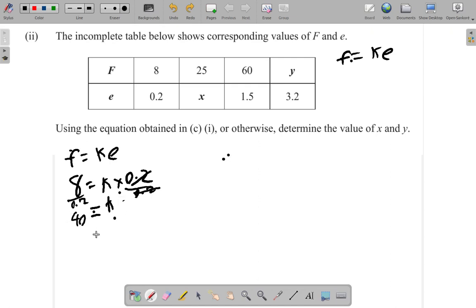f equals ke. 25 is equal to 40 times x. If you divide, 25 is equal to 40 times x divided by 40. So 25 over 40, 25 divided by 40 is 0.625. So 0.625 is equal to x. So it seems so far, x is equal to 0.625.